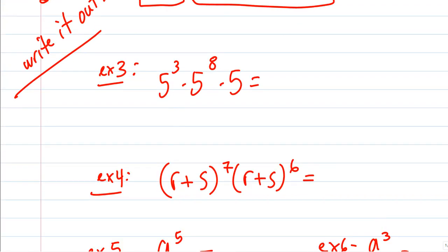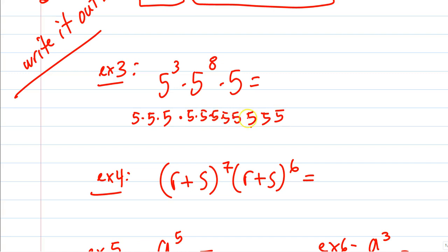Here's one where I'll catch some people: 5 to the third times 5 to the eighth times 5. Some say 5 to the eleventh — nope. What is 5 to the third? Three fives. Times 5 to the eighth — that's eight more fives. Times another five at the end. Count the fives: three, four, five, six, seven, eight, nine, ten, eleven, twelve. There are twelve. We're multiplying by five a total of twelve times.